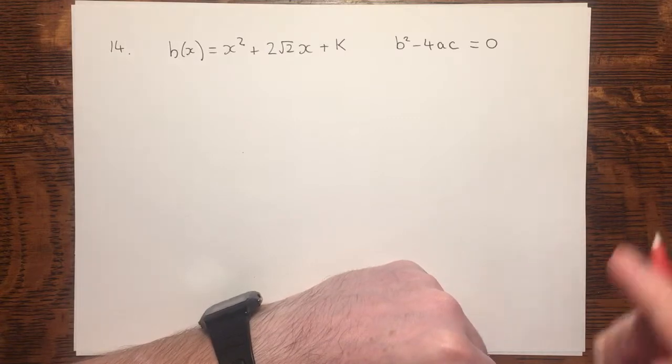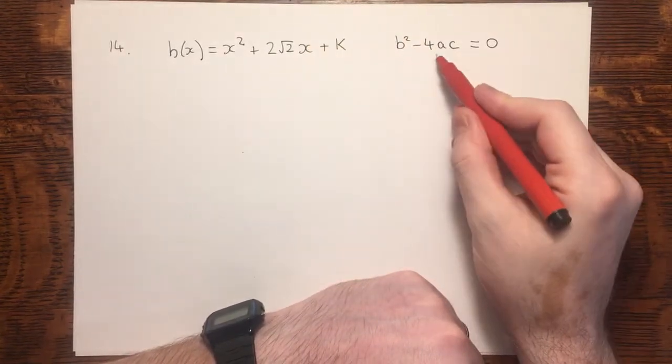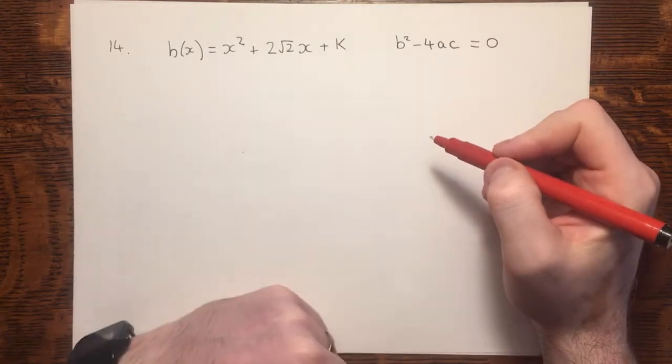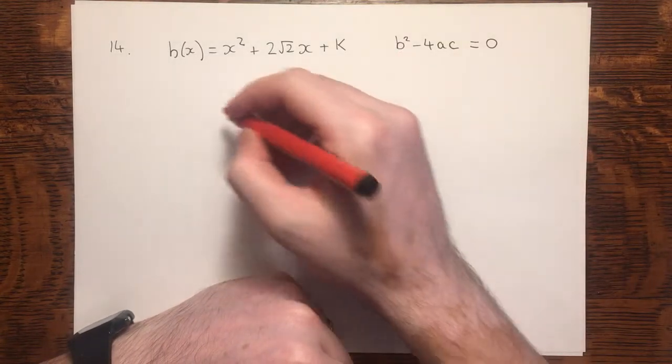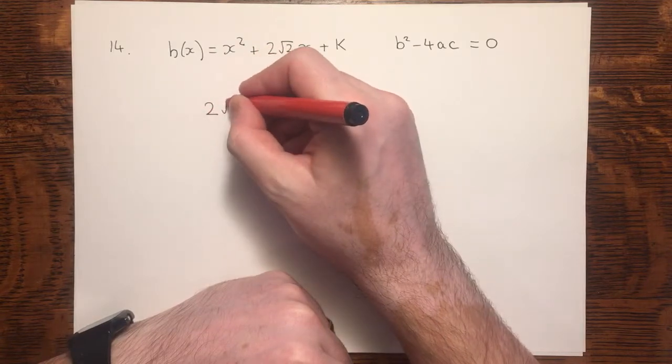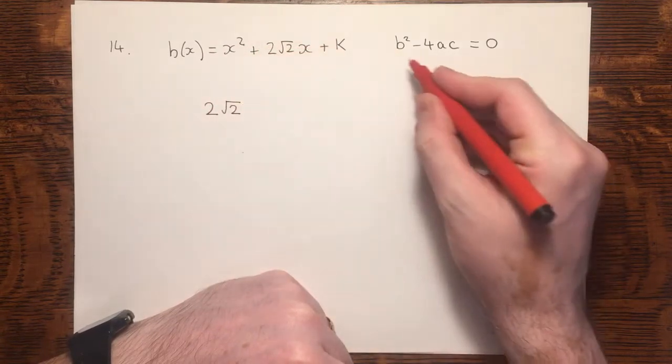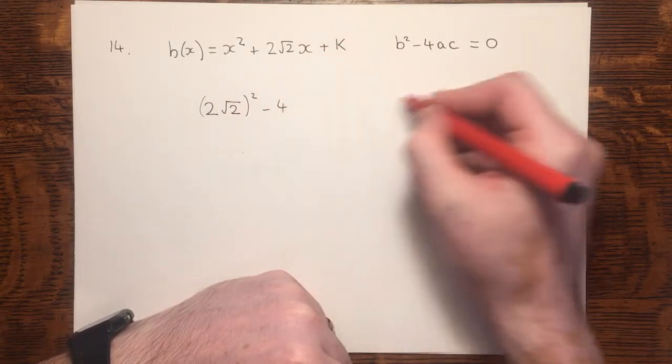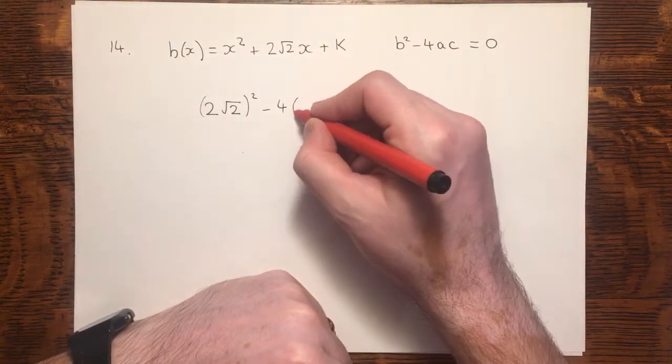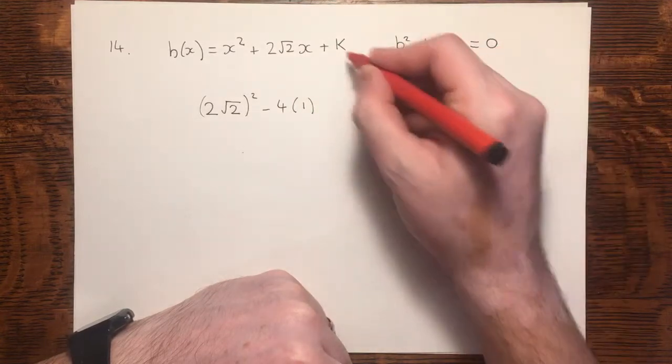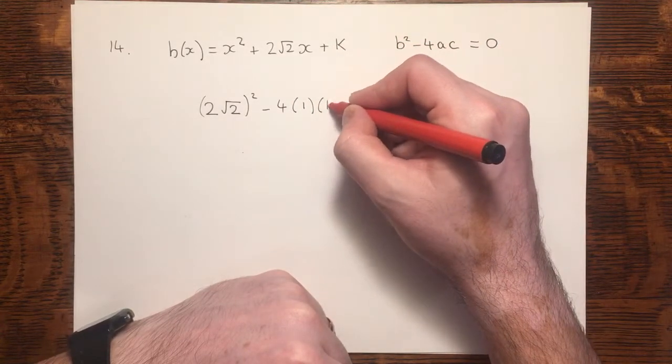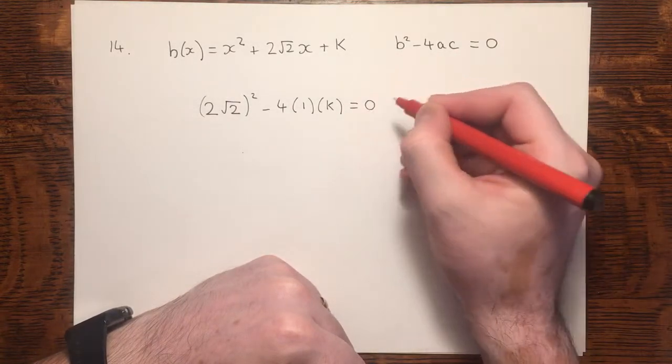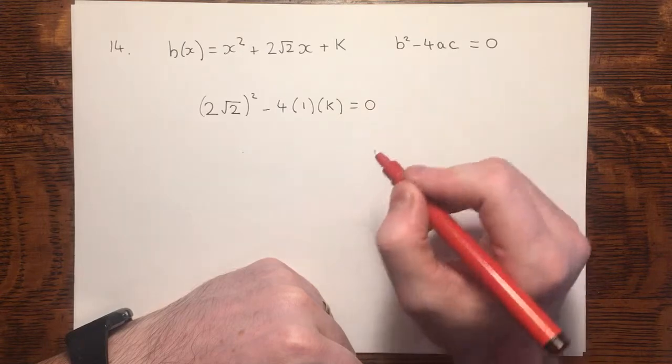Now we need to substitute the a, b, and c elements into this, and that should allow us to solve for k. b is 2√2 and b is being squared. a is equal to 1, and c is equal to k. From the fact that there are equal roots, we know that this discriminant still equals zero.